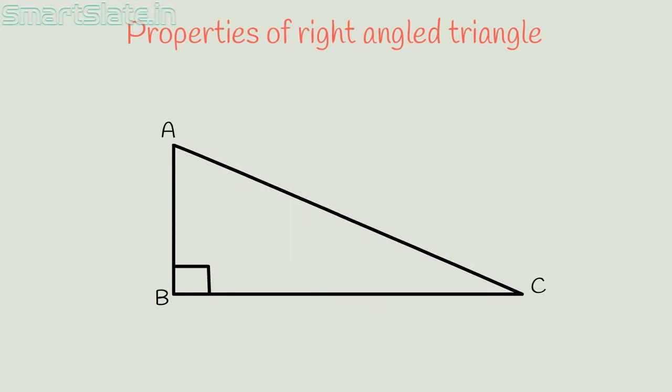The side opposite to the right angle is called the hypotenuse. The hypotenuse is the longest side in the triangle.